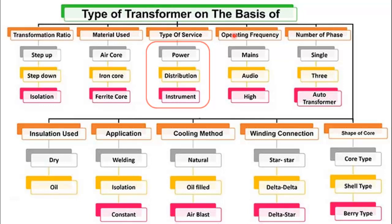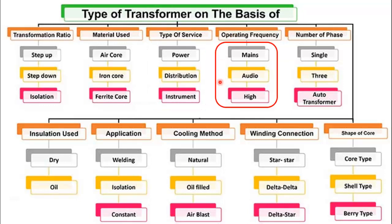The next category is the operating frequency. First is the mains operating frequency, which is either 50 Hz or 60 Hz in different countries. Another type is for audio frequency, and the last one is for higher frequency.